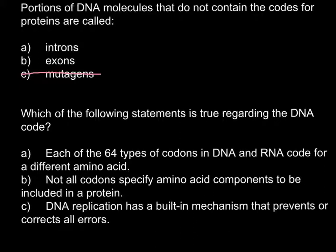We are left with choices A and B — exons and introns. Choice B, exons: this portion of the DNA or messenger RNA actually codes for the protein, so we have to cross that out. We are left with introns. Introns are portions of the messenger RNA or DNA that can be transcribed from the DNA but are later excised from the pre-messenger RNA. When mature messenger RNA is produced, introns are no longer present, so these portions do not code for protein.